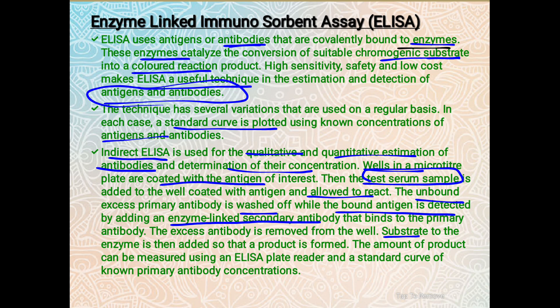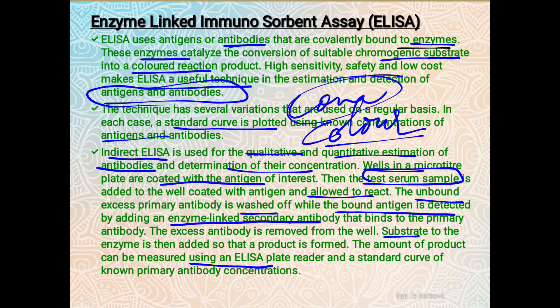The amount of product can be measured using an ELISA plate reader. Wells that are more deeply colored have more antibodies; wells with no color have no antibodies; lightly colored wells have less antibody. While color intensity gives a qualitative estimate, an ELISA plate reader machine gives the exact quantitative estimation based on a standard curve.